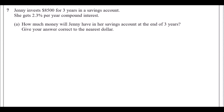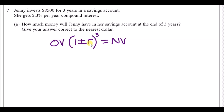The formula is always the original value — in this case eight thousand five hundred — times some multiplier. That multiplier is one plus or minus the rate, and if there are several periods you raise it to that power — in this case three. The original value is eight thousand five hundred, and the rate is an increase of 2.3%.